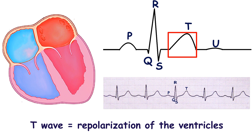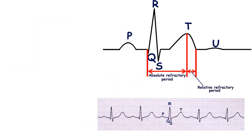The T wave represents the repolarization of the ventricles. The interval from the beginning of the QRS complex to the peak of the T wave reflects the absolute refractory period. The second half of the T wave reflects the relative refractory period. The refractory period is the interval during which cardiomyocytes don't respond to stimuli. During the absolute refractory period, cardiomyocytes don't respond to stimuli at all, but during the relative refractory period, a new action potential may be elicited under some circumstances.